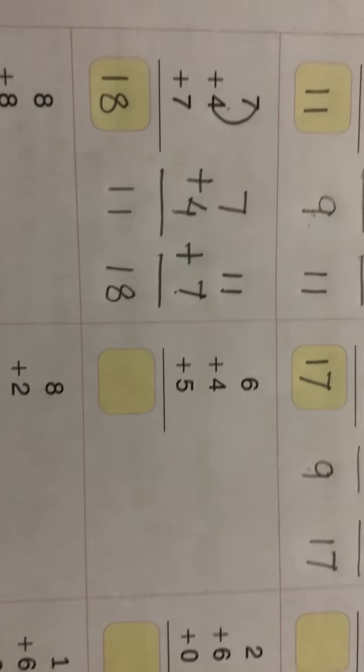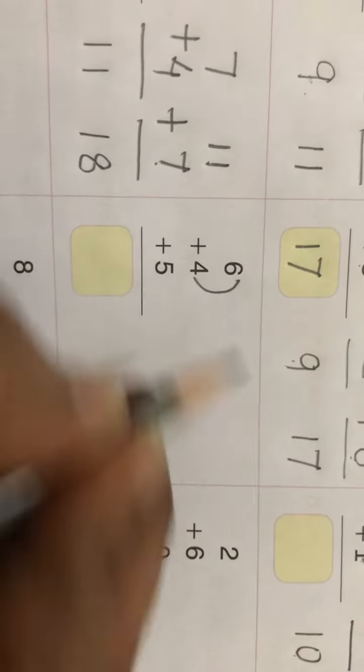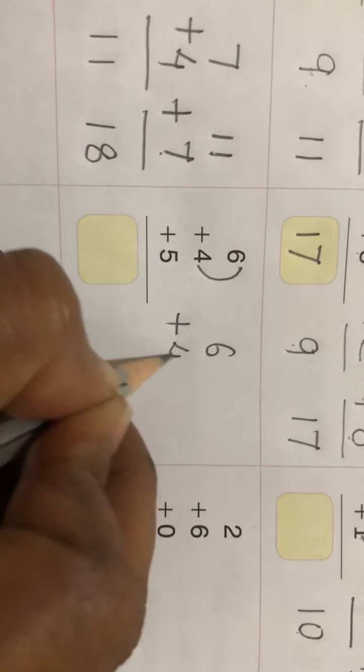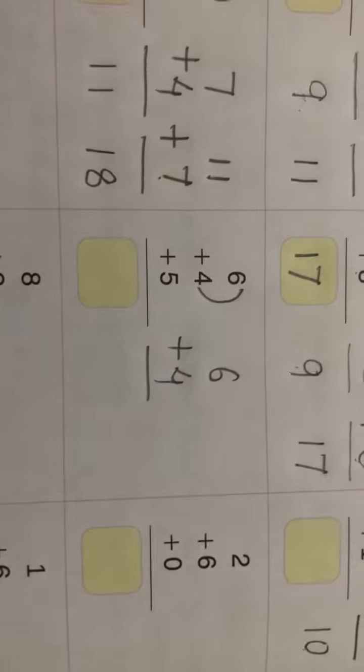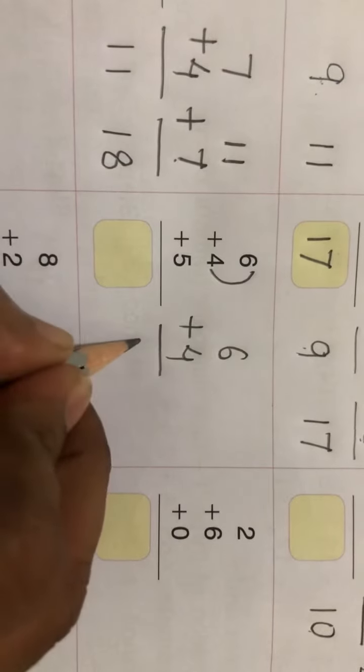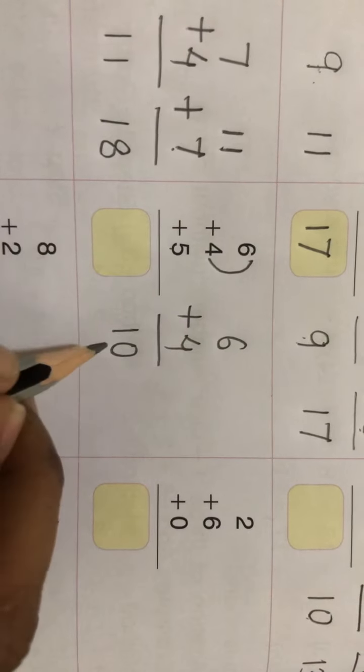Same way, next one we'll do. 6 plus 4, add these first. After 6, 4 numbers ahead: 7, 8, 9, and 10. 10 will be your sum. Okay, now add 5 to 10 to get 15. 15, okay.